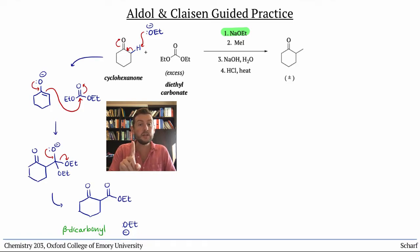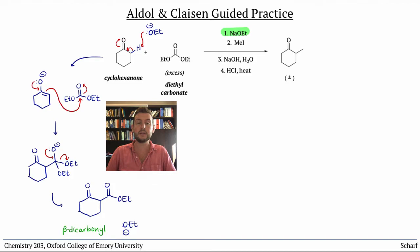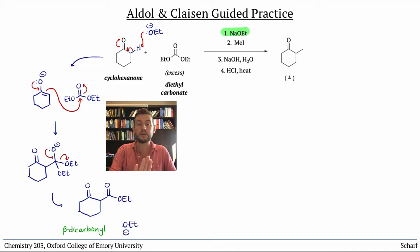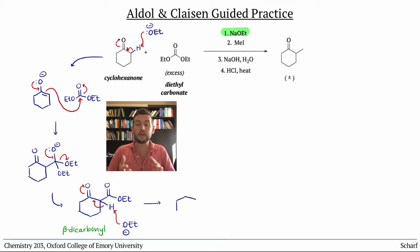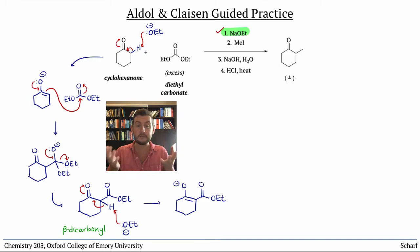We know that the Claisen reaction is only favorable when a proton between the two carbonyl groups can be deprotonated. So the next step, which drives the whole reaction forward, is deprotonation here, which is essentially complete — that is, all of the starting material has been converted to this enolate, and step one is done.